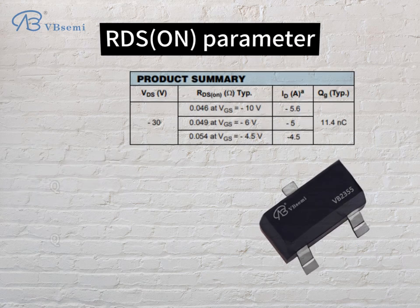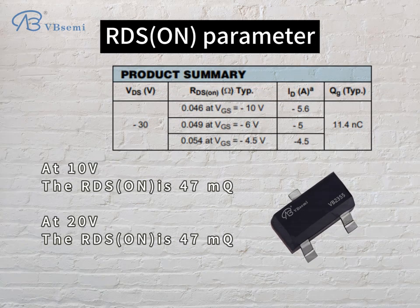RDS on parameter: at 10V, the RDS on is 47mΩ; at 20V, the RDS on is 47mΩ.